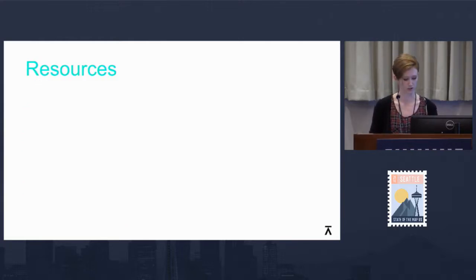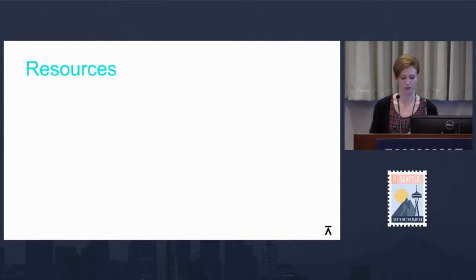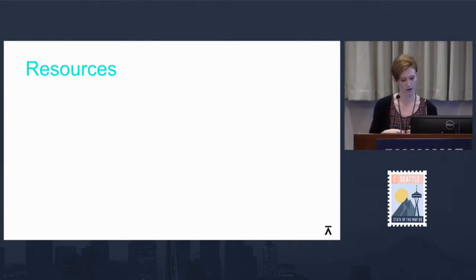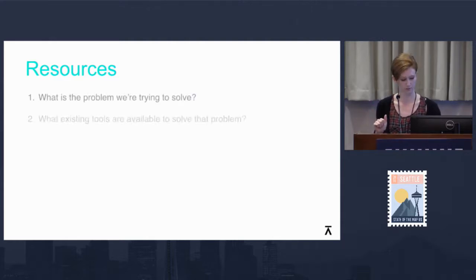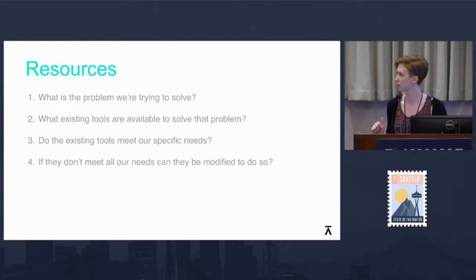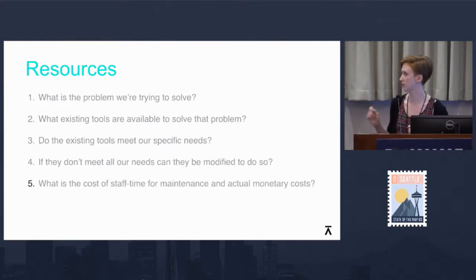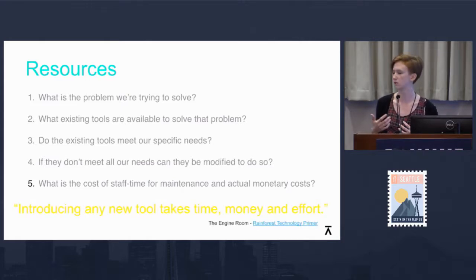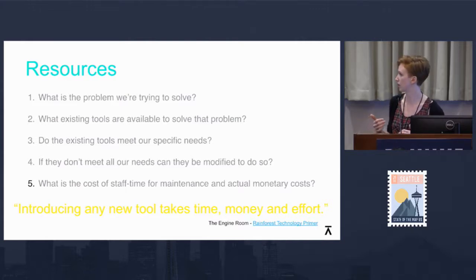Let's talk about resource utilization, because this is a topic that many nonprofit workers lose sleep over. Chances are, if you're a nonprofit, you have limited resources and technology is expensive. To make sure we're choosing the right tools, when starting any project at Kadasta, we always ask ourselves: What is the problem we're trying to solve? What are the existing tools? Do these existing tools meet our needs? If they don't, can they be modified? And finally, what is the cost — not only the actual cost of the technology, but staff time and maintenance. The Engine Room put together a great primer on Rainforest Technology and choosing tools within these projects. If you get the chance to check it out, I highly recommend it.